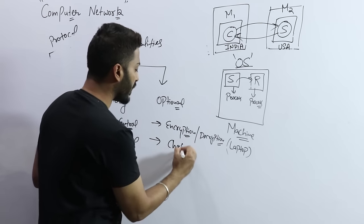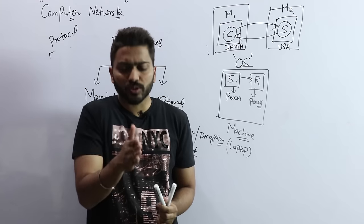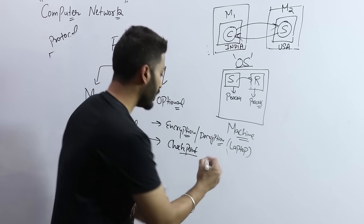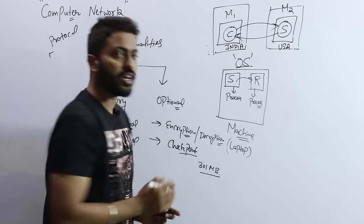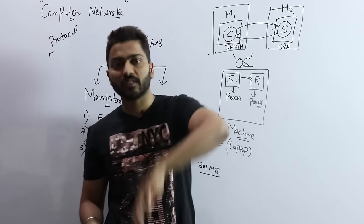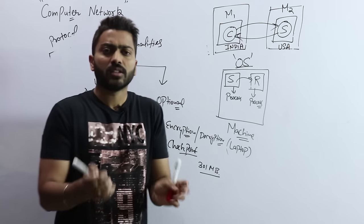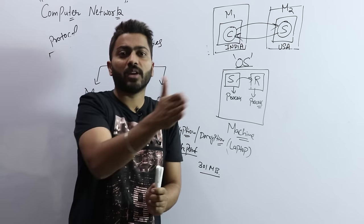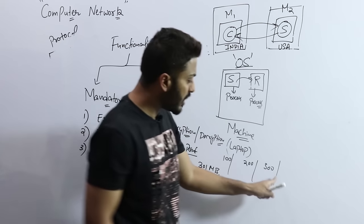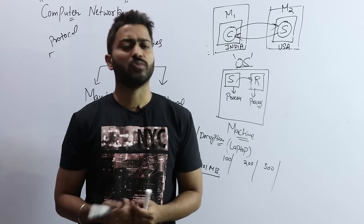Another optional functionality is checkpoints. When we are downloading data — let's say I have a 500 MB file and I am downloading it. Say 301 MB has been downloaded and the downloading fails. The next time I restart the download, it should not start from 0. It should resume from 301 MB or some lower checkpoint value. For example, a checkpoint can be set after every 100 MB, so if download fails the resume starts from the last checkpoint. However, this is not required by all applications.